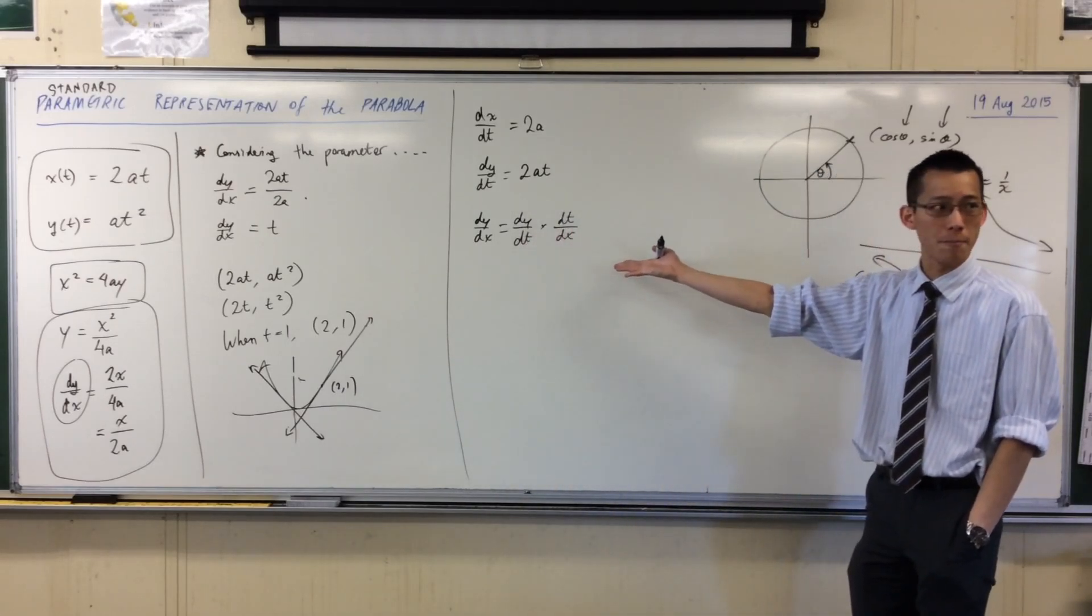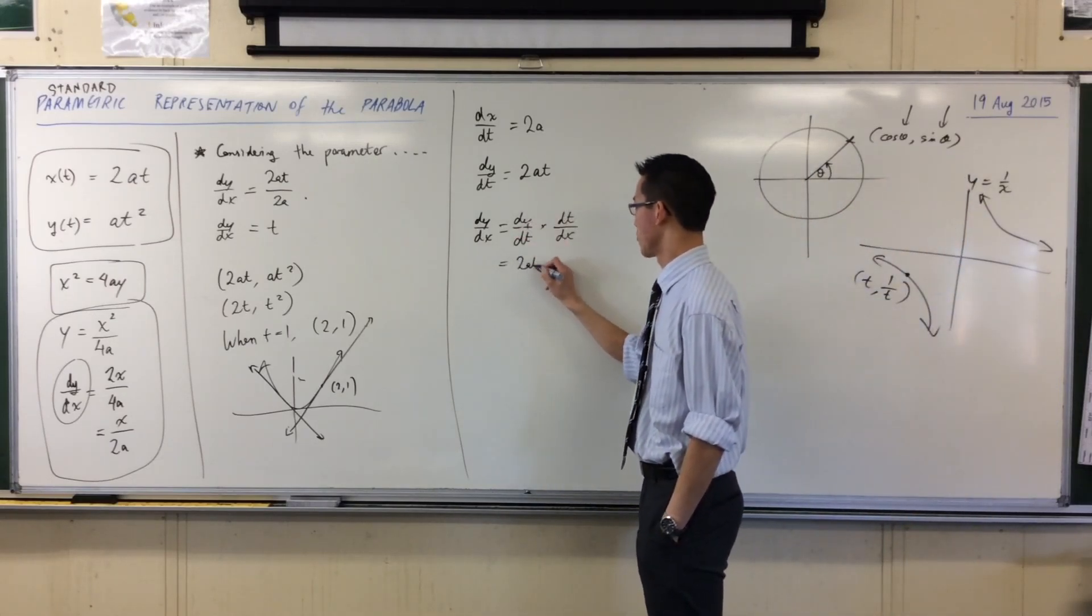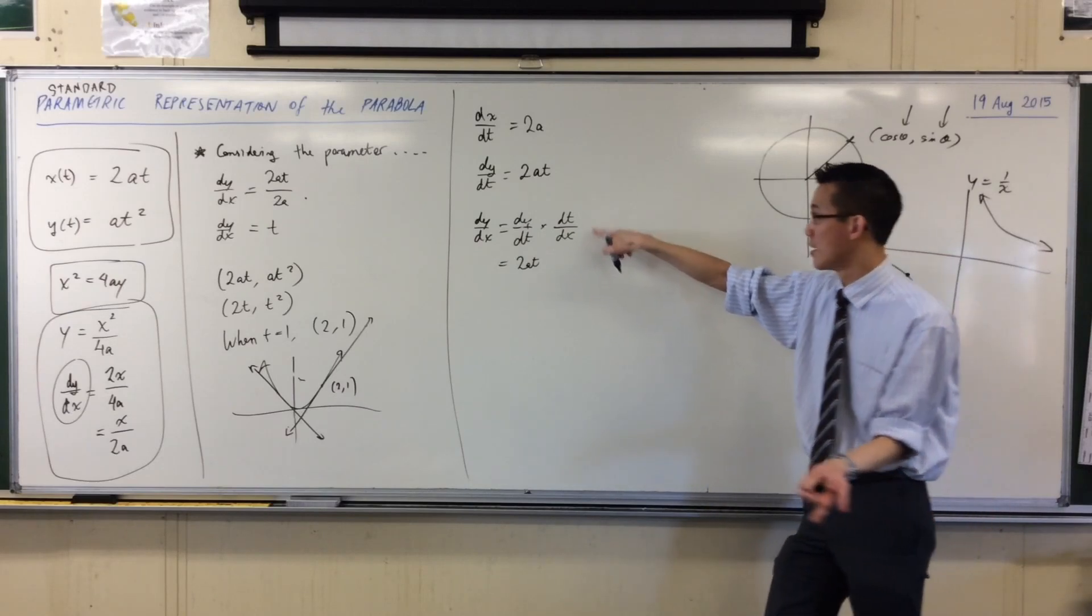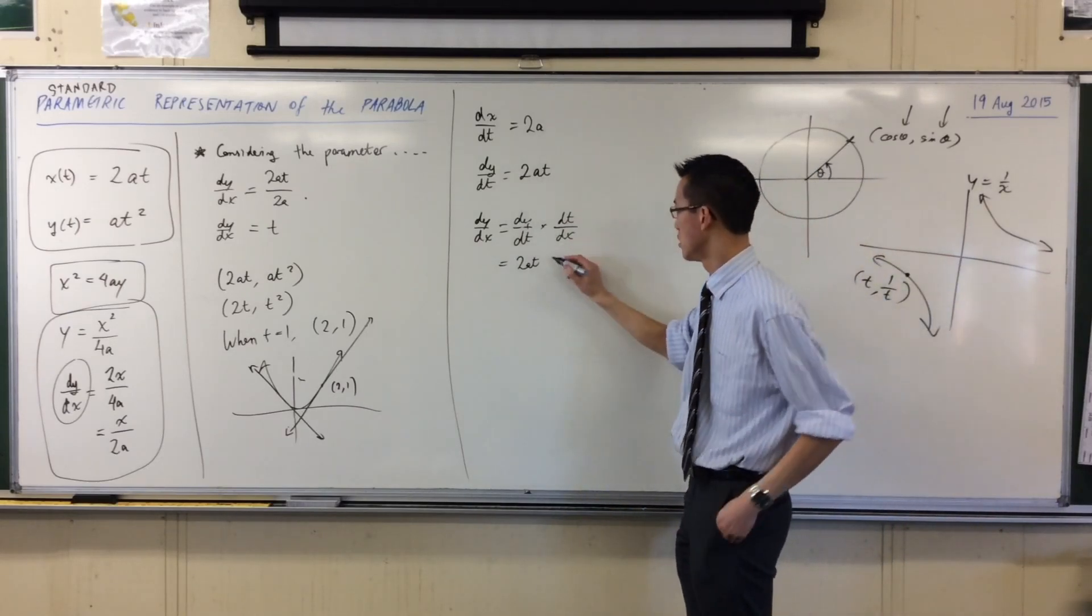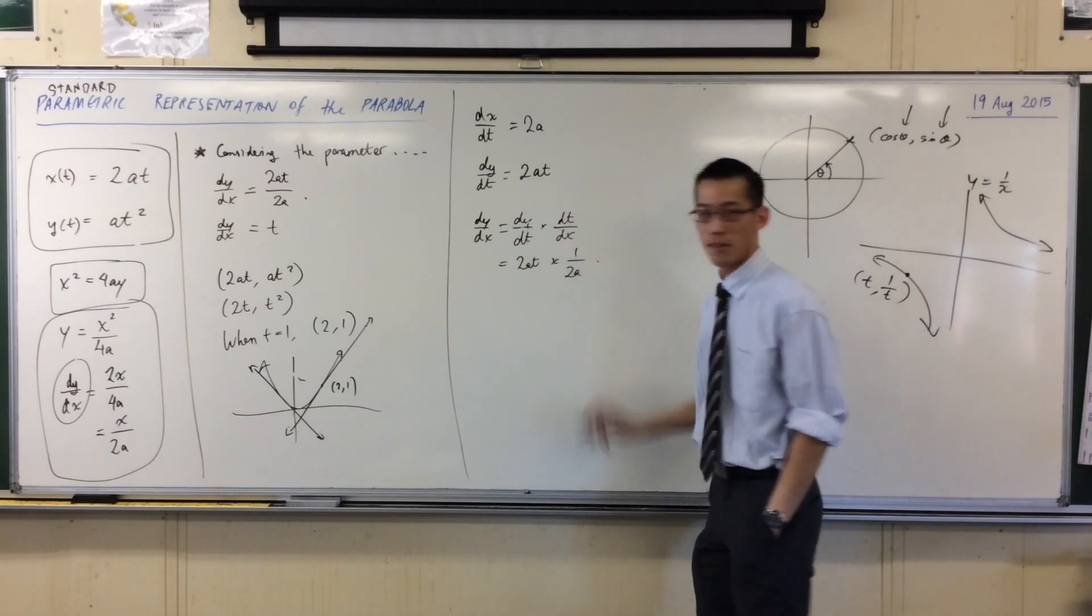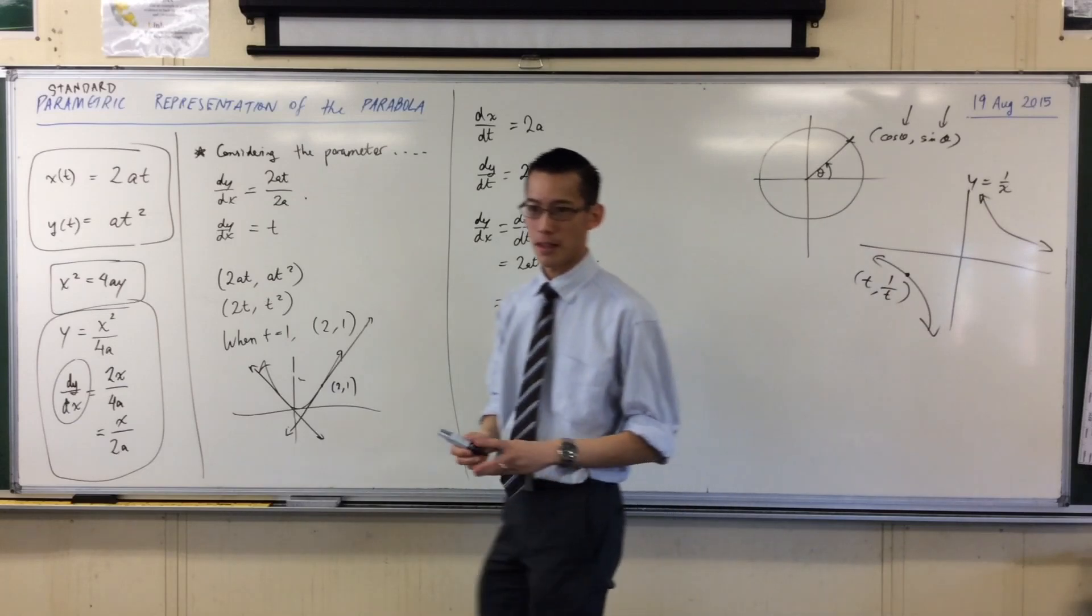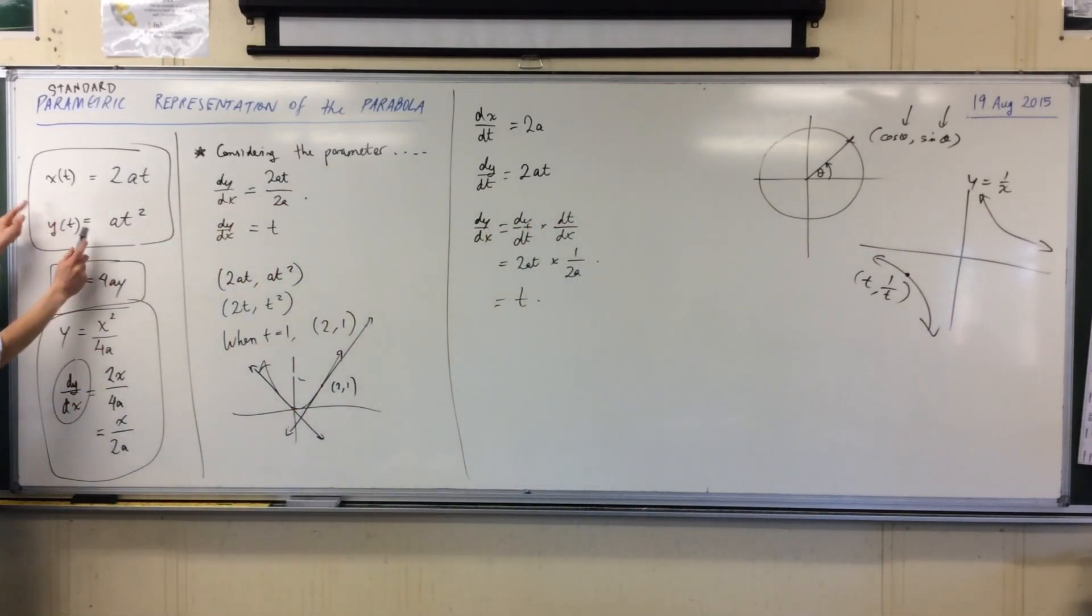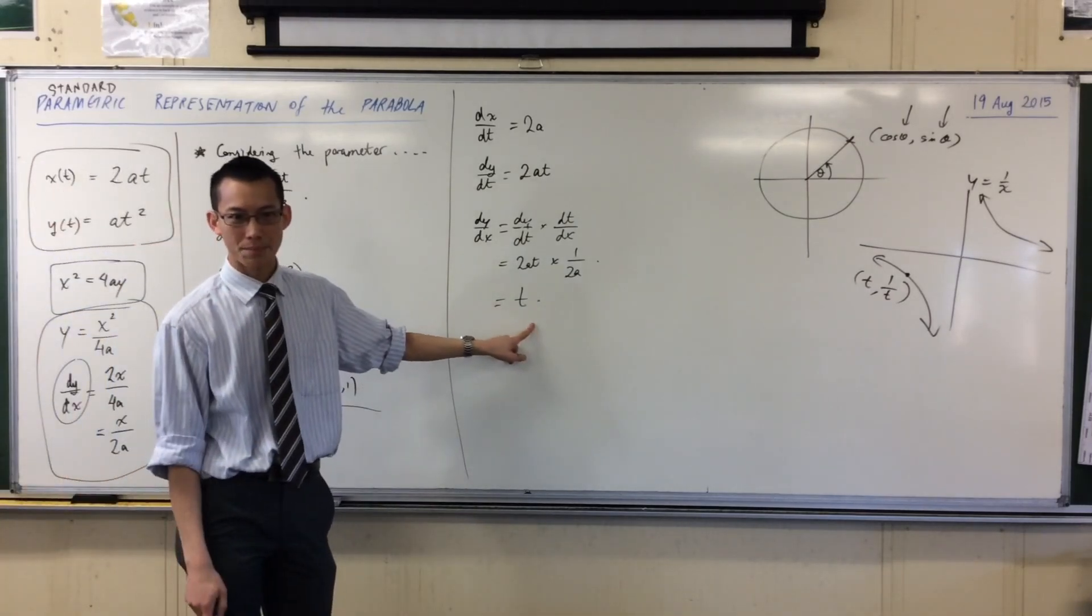You see that? So, this is just chain rule. You've seen this before. Now, dy and dt, I already know what that is. That's 2at. dt on dx, be careful. I don't have dt on dx. I have its reciprocal, dx on dt. No big deal. I'll just flip it upside down. And, of course, we get the same result out that we expected. So, you can think about it in merely parametric terms. You can go directly from here to see the meaning of the parameter.